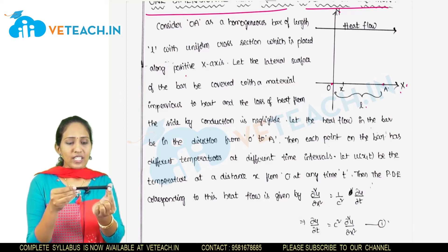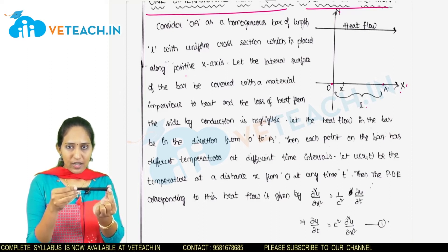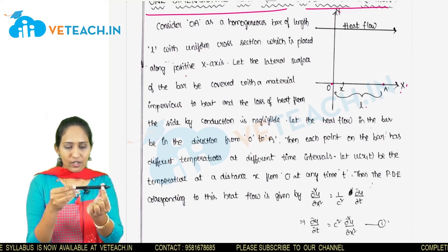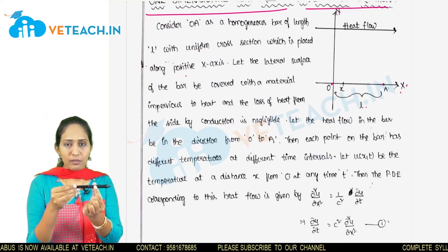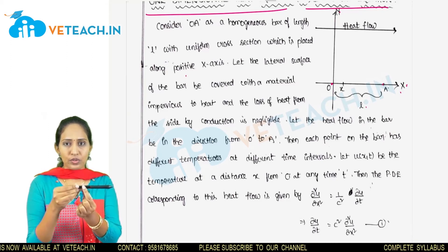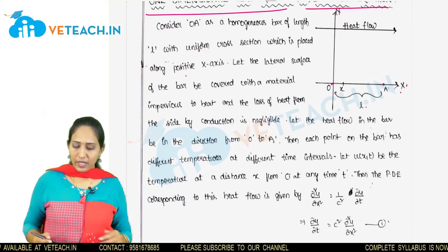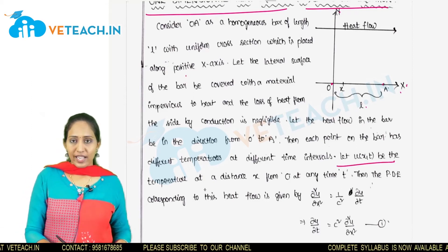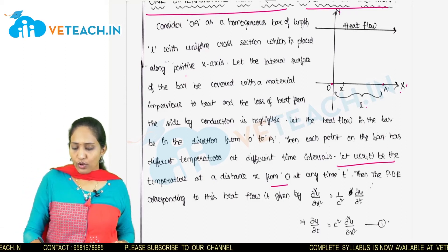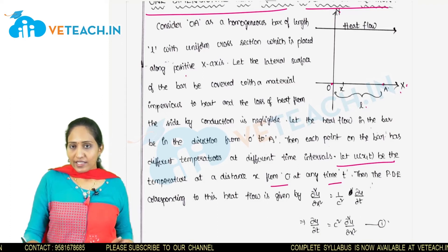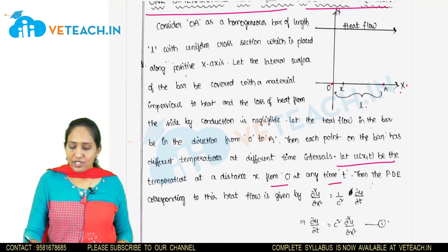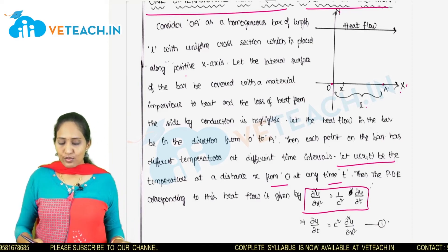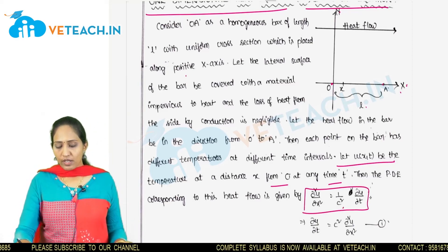So that means at any given time, the temperature will be different at different points along the rod. Let u(x, t) be the temperature at a distance x from the origin O at any time t. Then the partial differential equation governing this is: ∂²u/∂x² = (1/c²) · ∂u/∂t.